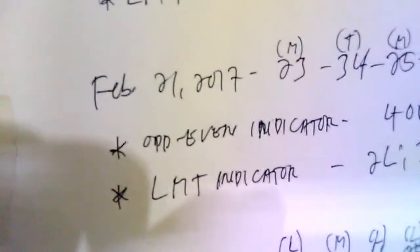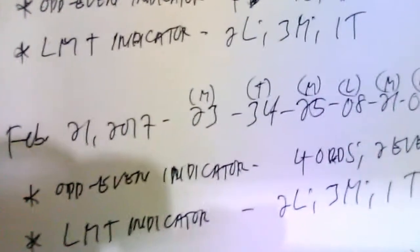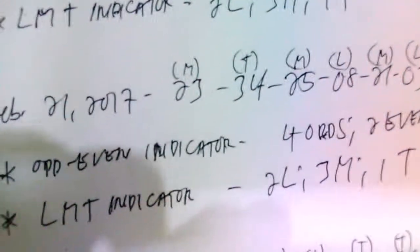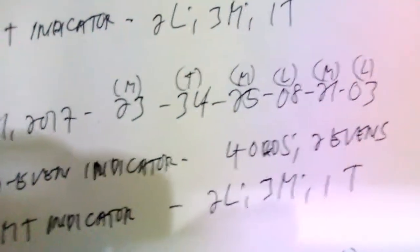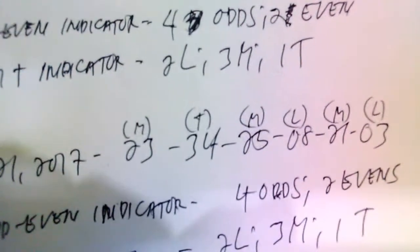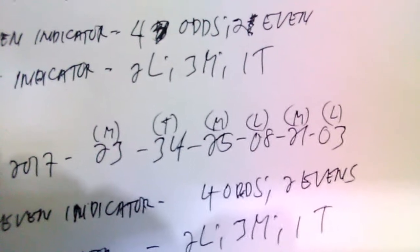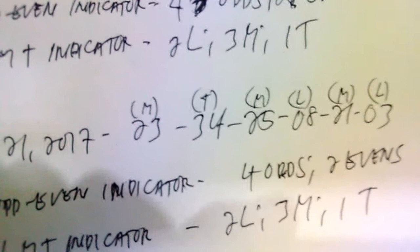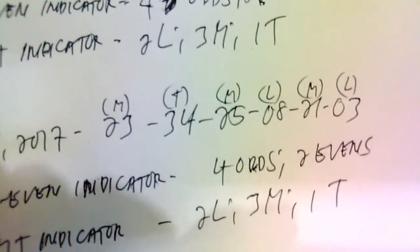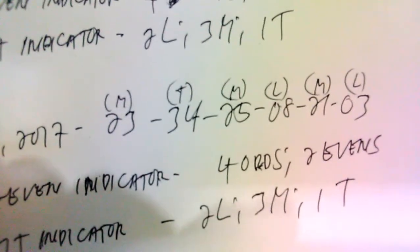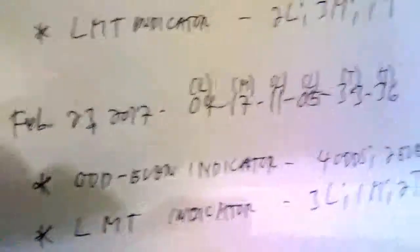On February 21, 2017, the results were 23, 34, 25, 20, 08, 21, and 03. Under the odd/even indicator, this is four odd and two even — the odd numbers are 23, 25, 21, and 03. Under the LMT indicator, it is 2 low, 3 middle, 1 top — the low numbers are 08 and 03, the middle numbers are 23, 25, and 21, and the top number is 34.